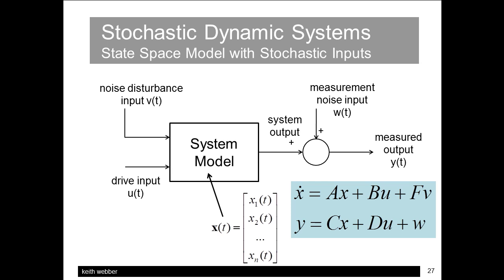The noise term FV in the system equation represents the noisy driving signal V, with the input vector F allocating that input to the various system states, just as the B vector does for deterministic inputs. The W term added to the output represents the noisy measurement.